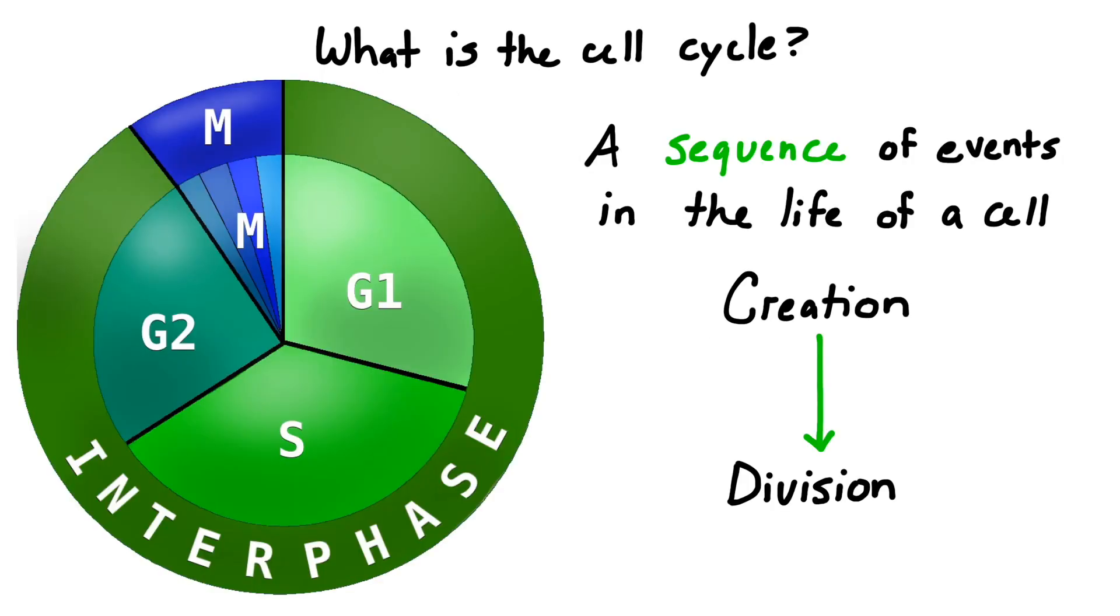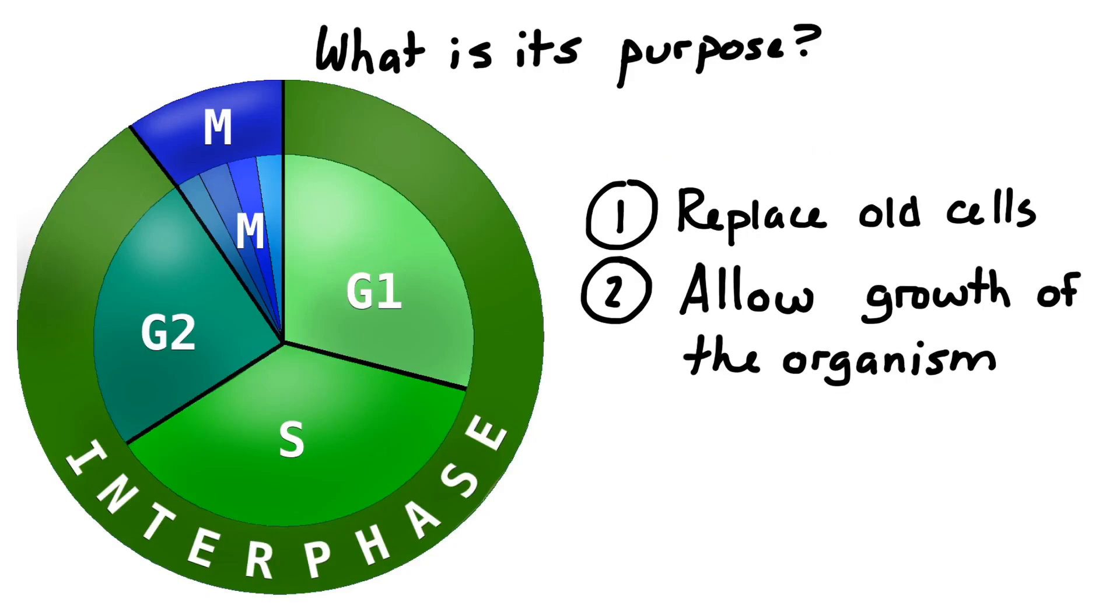The cell cycle is a sequence of events in the life of a cell, beginning with its creation from another cell and ending when it divides. The cell cycle occurs in order to replace old cells and also to allow for the growth and development of the organism.